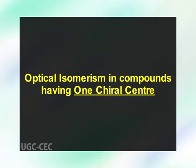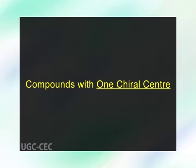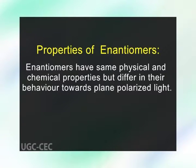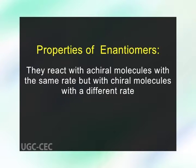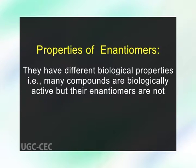Optical isomerism in compounds having one chiral center. A carbon atom in a molecule attached to four different groups is called an asymmetric or chiral carbon. Such molecules are not superimposable on their mirror image and are optically active. A molecule having one chiral carbon atom exists in two optically active enantiomeric forms. Enantiomers are optical isomers which are non-superimposable mirror images of each other. They have the same physical and chemical properties but differ in their behavior towards plane polarized light. One enantiomer rotates plane polarized light towards right and another towards left to an equal extent. They react with achiral molecules at the same rate but with chiral molecules at different rates, and they have different biological properties.